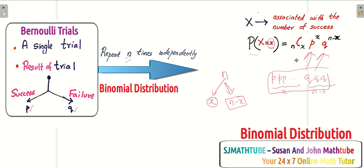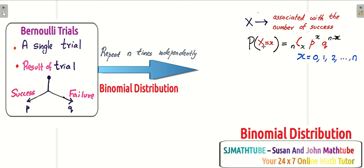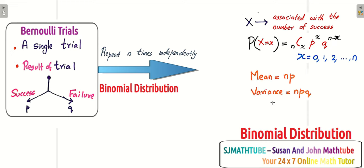Now remember, practically the successes and failures won't appear in a fixed pattern. There will be lots of combinations for this x number of successes, and that is given by our combination term nCx. So the probability of x number of successes is given by nCx times P to the power x times Q to the power n minus x, where x can take values from 0, 1 up to n. The mean is given by NP and the variance is given by NPQ.